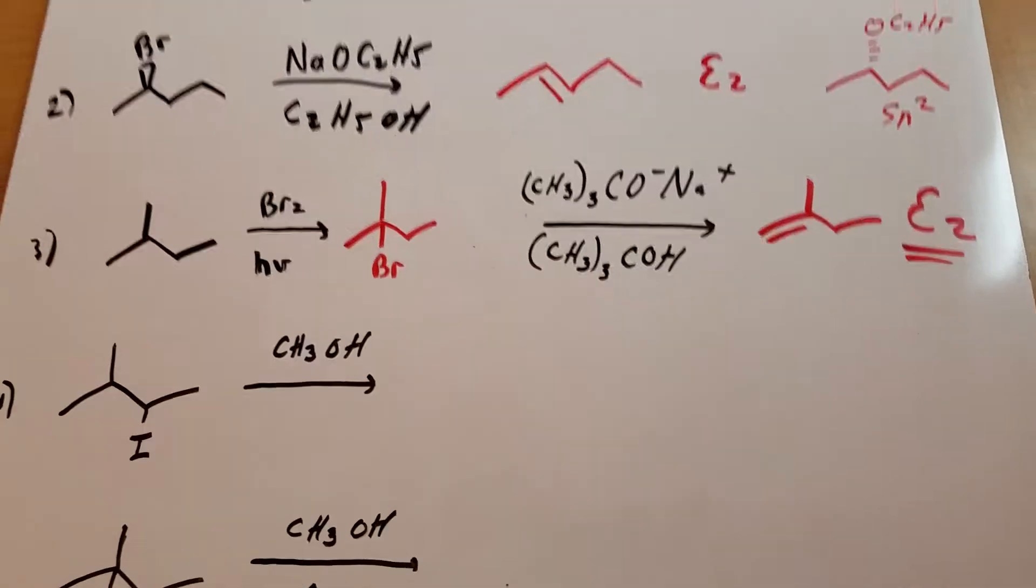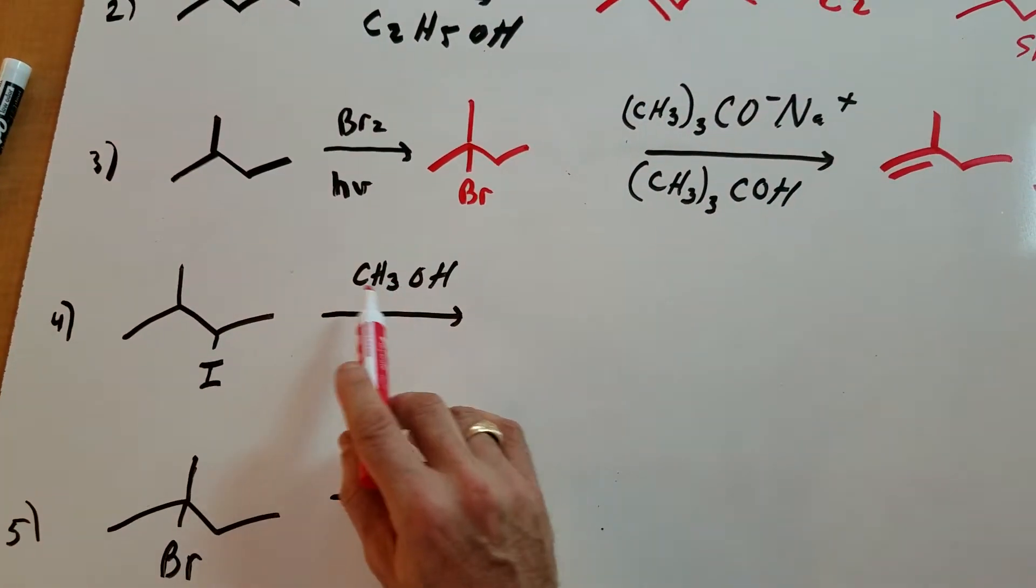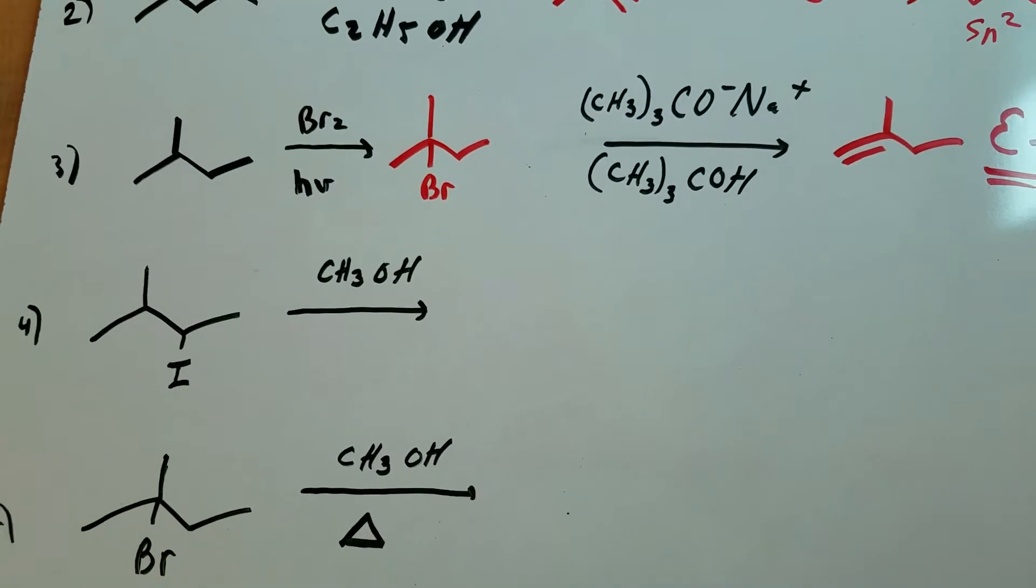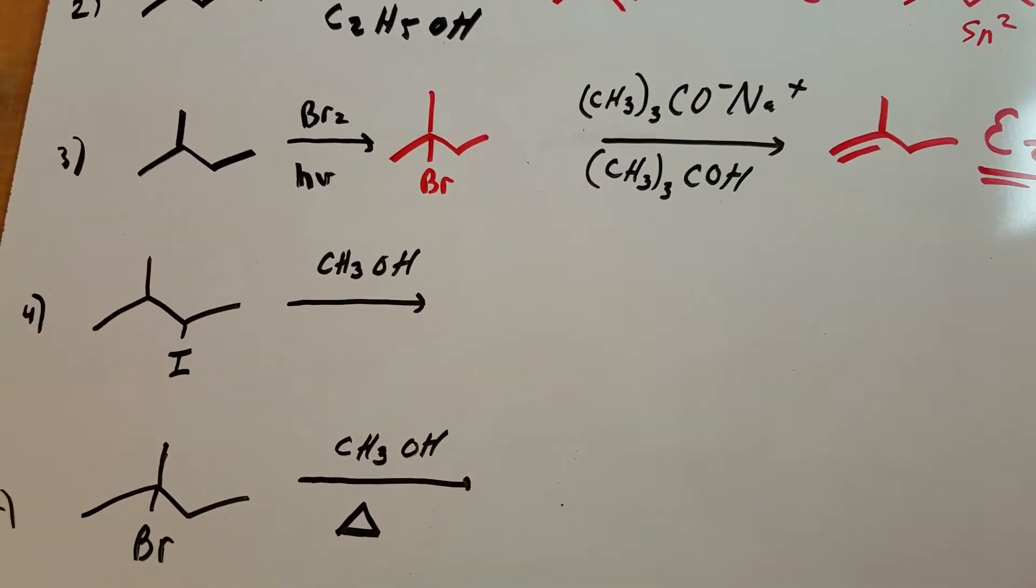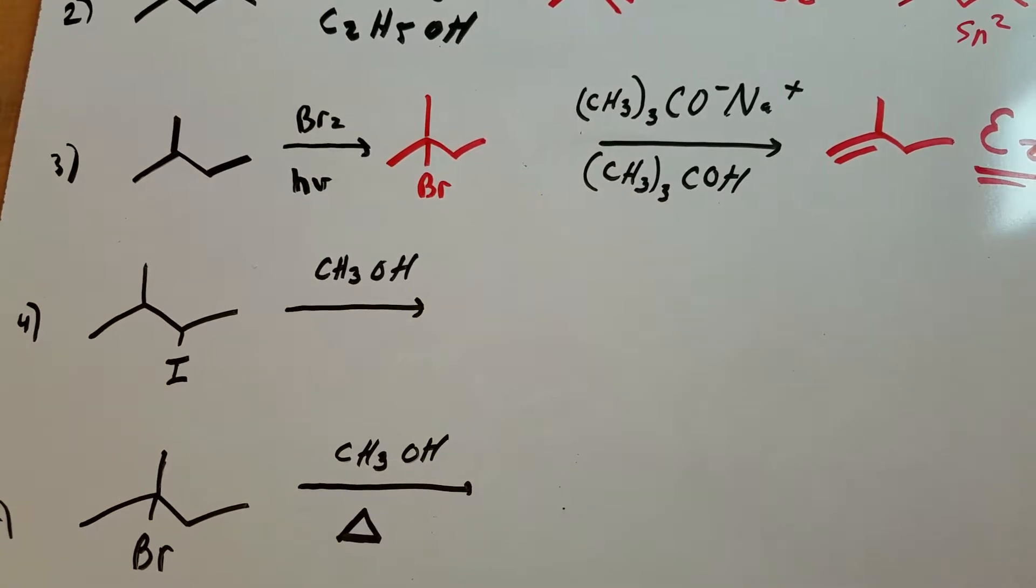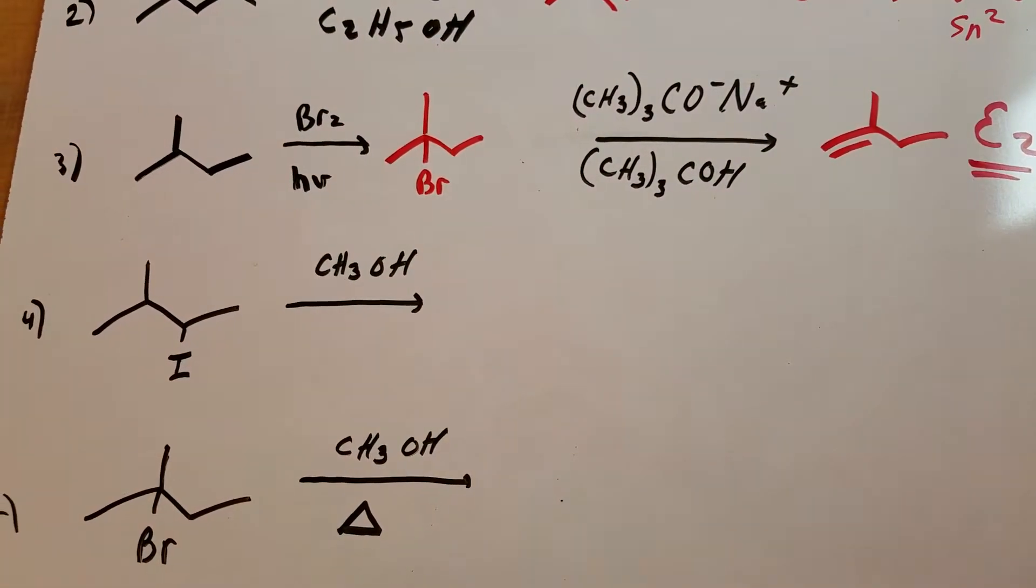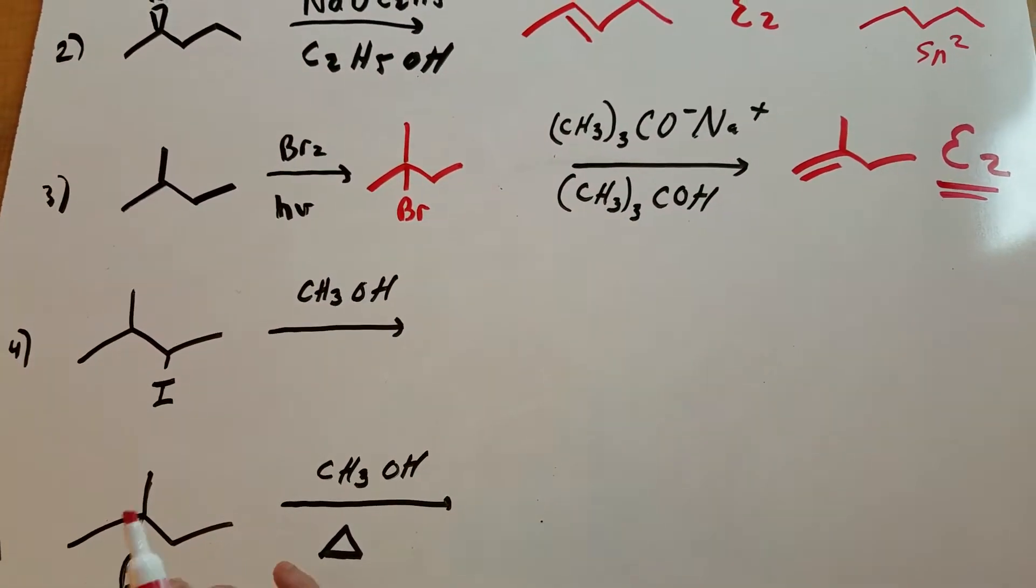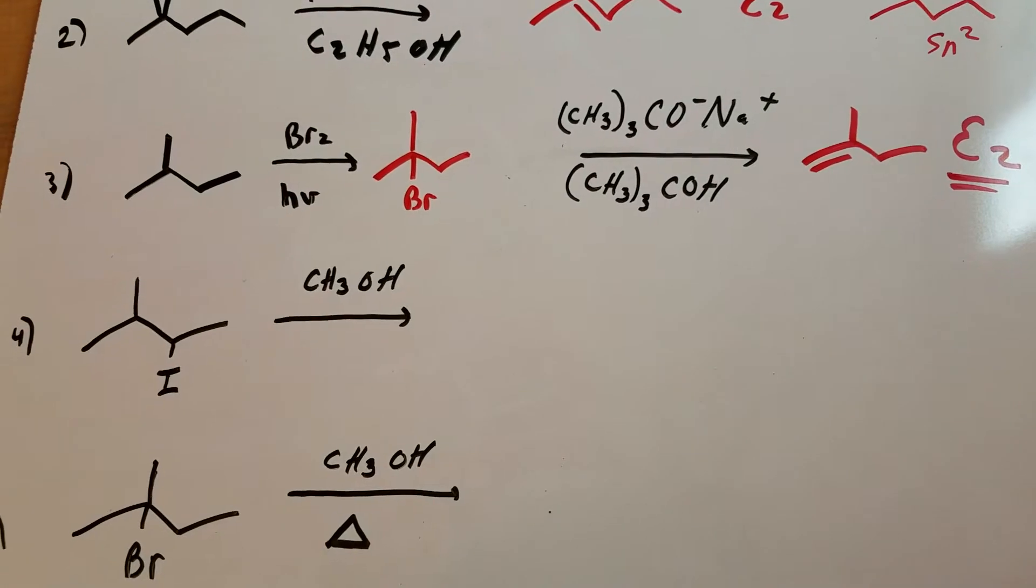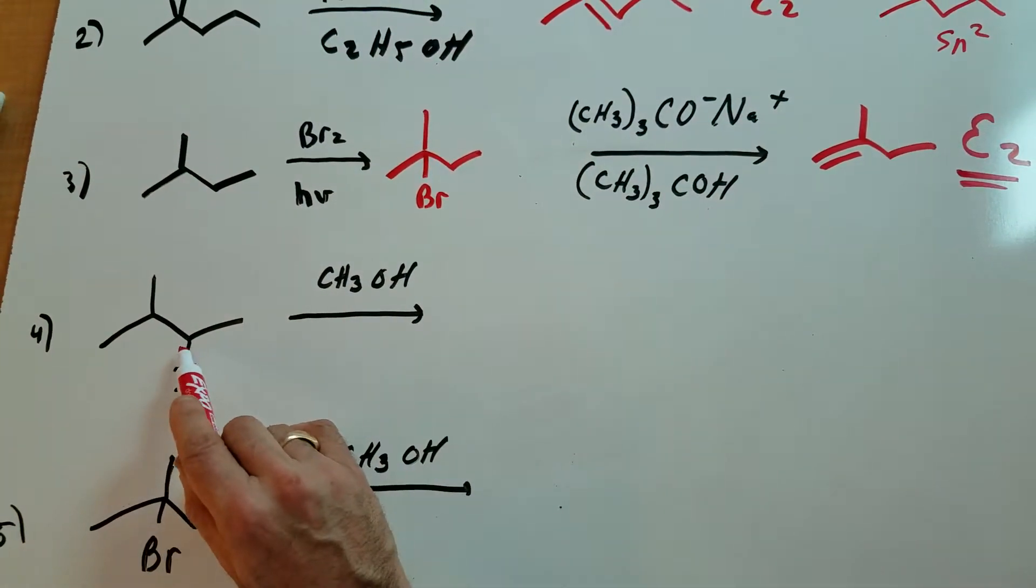Problem number four is a tricky question. I gave you a secondary halide and here the only environment is a weak nucleophile. This is going to set the stage for an SN1. Anytime there's an SN1 we know it's two steps. The first step, being the slow step, is the formation of the intermediate carbocation.